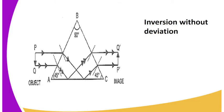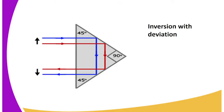Inversion without deviation. As you can see, that is inversion without deviation. It produces an inverted image. As you can see, the rays are deviated through 180 degrees. That is inversion with deviation.